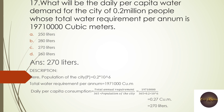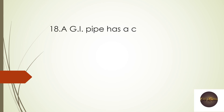The daily per capita consumption equals total annual requirement divided by 365 days multiplied by population. The result is 0.27 cubic meters per person per day. Multiplying by 1000 gives 270 liters. So the right answer is 270 liters.